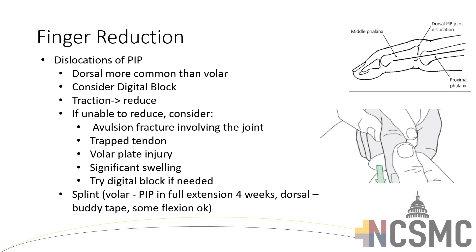If you're unable to reduce, however, you need to consider that there may be an avulsion fracture involving the joint creating a mechanical block. There may also be a trapped tendon or a volar plate injury affecting the block. At that point, you may need to refer for x-rays or refer to the emergency department. Definitively managing these, you apply a splint. If it's a volar dislocation, it needs to be in full extension. If it's a dorsal dislocation, you can basically apply buddy tape, and these heal pretty well over the course of about four weeks.